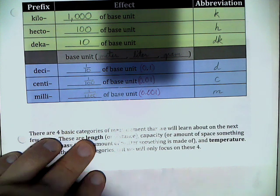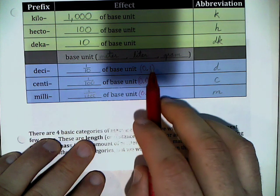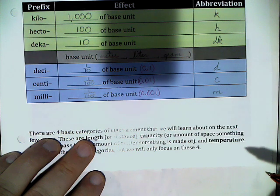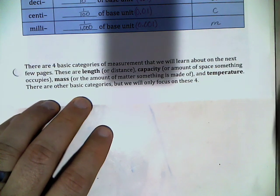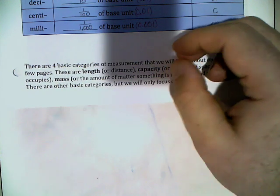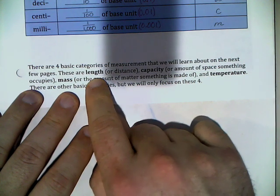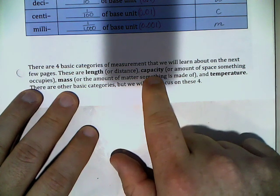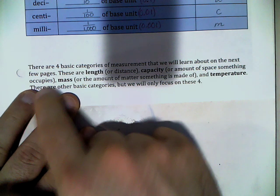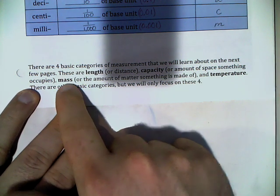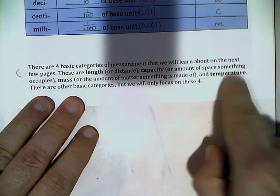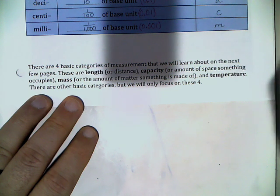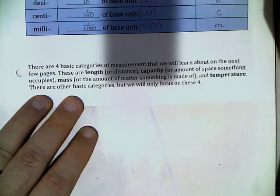A quick reminder: if there's one zero in the denominator, there's one decimal place in your decimal. So there are four basic categories of measurements we're going to talk about: length or distance, capacity (the amount of space something occupies), mass (the amount of matter something is made up of), and finally temperature. Temperature is a little different from the others. Let's go ahead and flip the page.